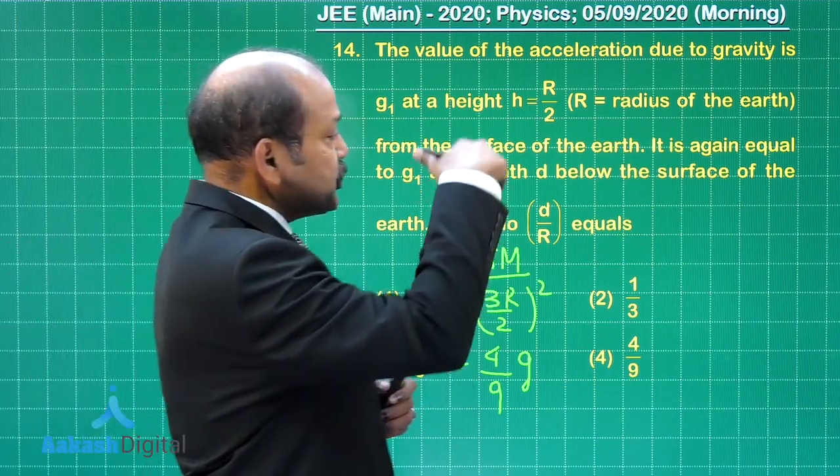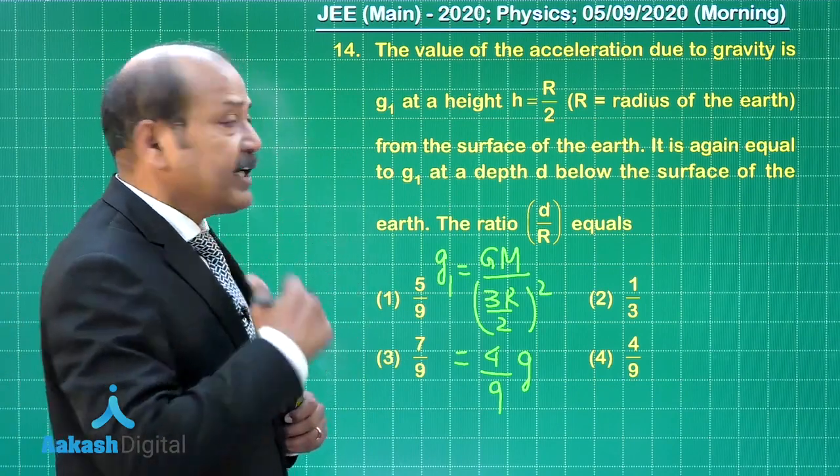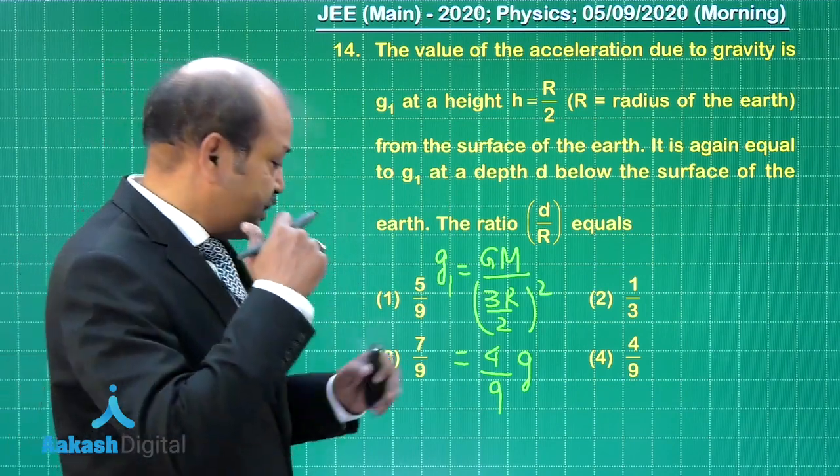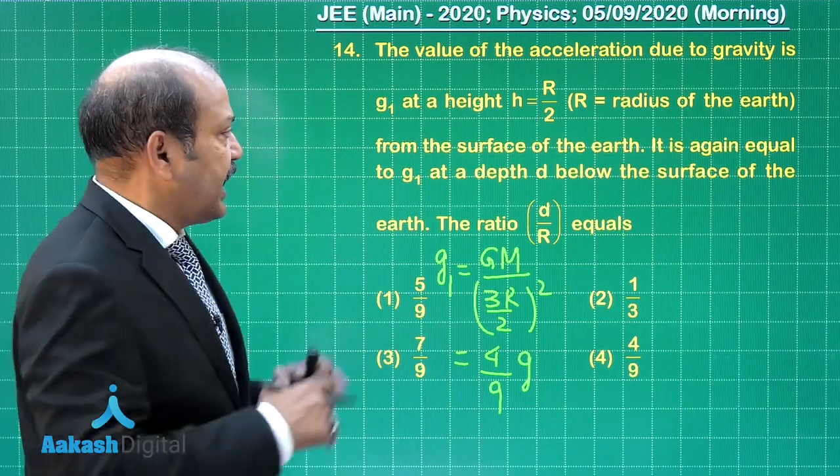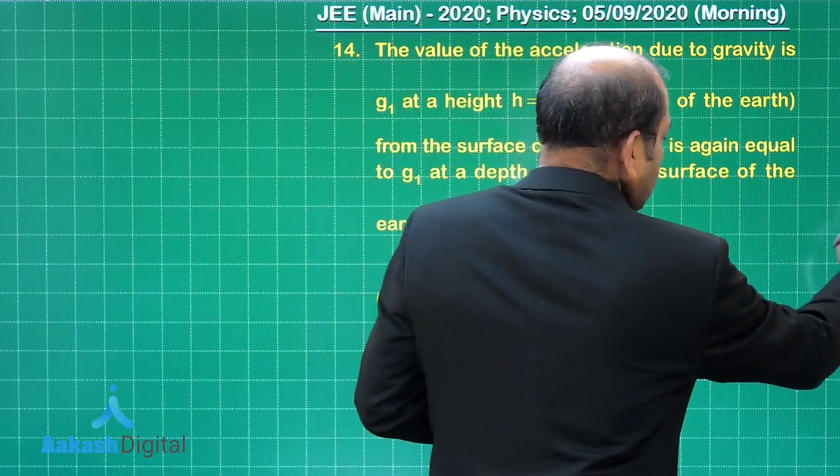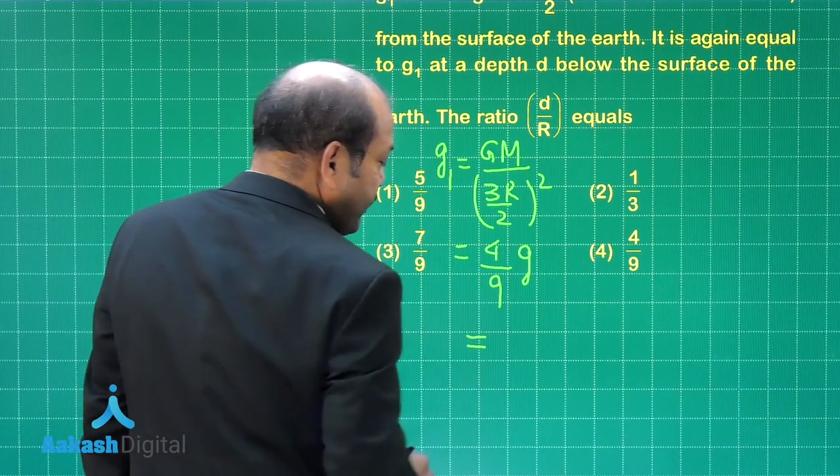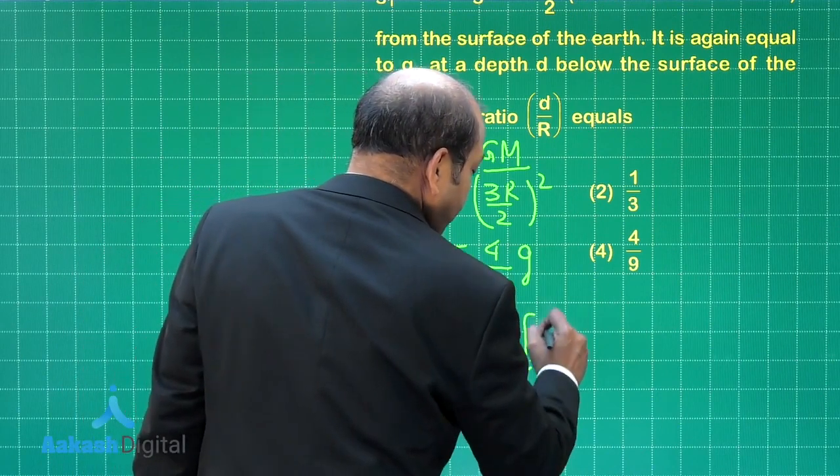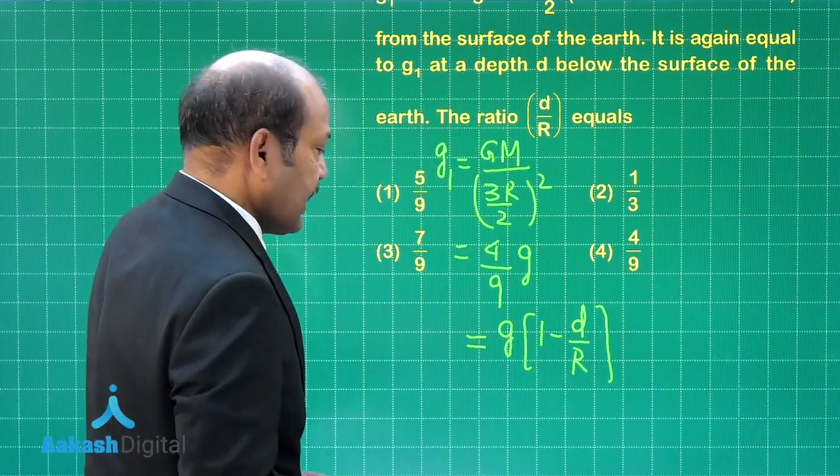Now if we are going to depth d, the value of g there becomes g on the surface into 1 minus d by r, and according to the question that value is equal to g1. So that means we equate this to g into 1 minus d by r and solve for d by r.